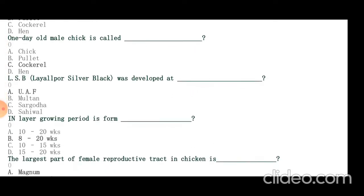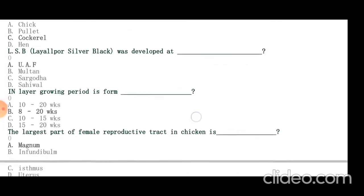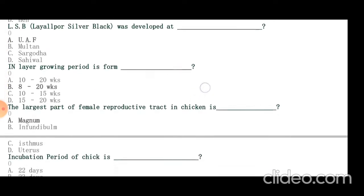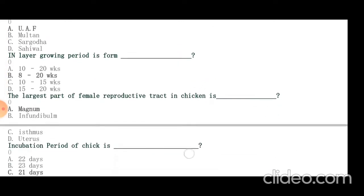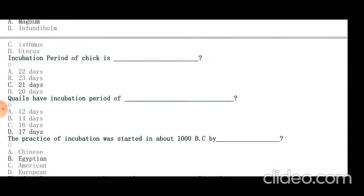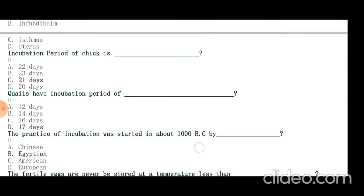In layer, growing period is from 8 to 20 weeks. The largest part of female reproductive tract in chicken is magnum. Incubation period of chick is 21 days. Quails have incubation period of 17 days. The practice of incubation was started about 1000 years before Christ by Egyptians.